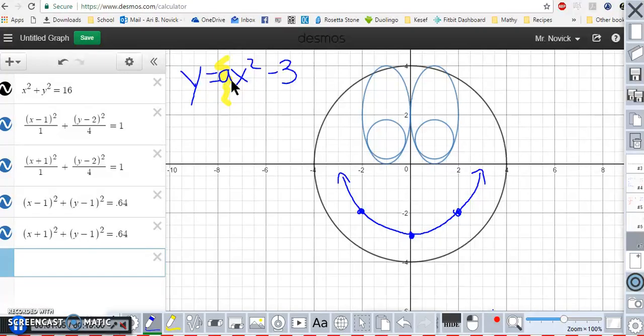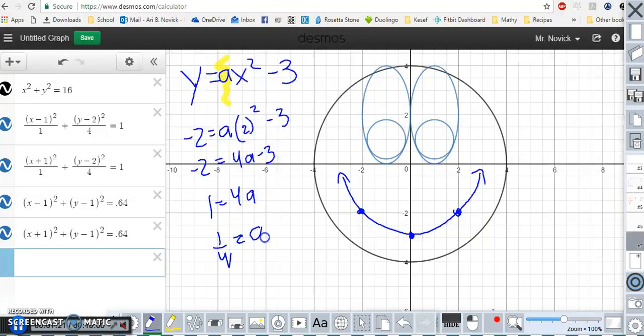The point 2, negative 2 has to work, so negative 2 equals a times 2 squared minus 3. Negative 2 equals 4a minus 3, so one-fourth equals a. Therefore, y equals one-fourth x squared minus 3.